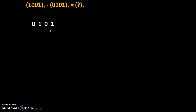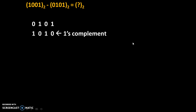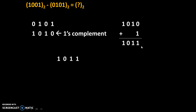To take the 2's complement of the second number, we will first take the 1's complement by replacing each 0 by 1 and each 1 by 0. So we take the complement of every bit — this is called the 1's complement of the second number. Then we add 1 into it to get the 2's complement. So 1's complement is 1010 plus 1, which gives us 1011 as the 2's complement of the second number.